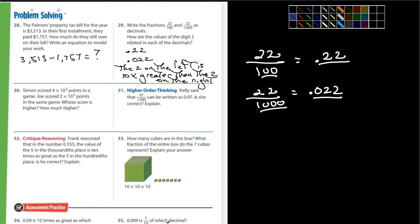the two on the left is 10 times greater than the two on the right. All right? And in the first video, I talked about that. I talked about, depending on if you're going left or right, it's 1 tenth or 10 times greater if the digits are the same.